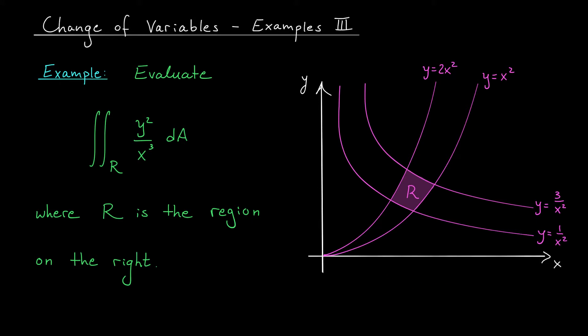You can see that it's bounded between four curves: y equals x squared, y equals 2x squared, y equals 1 over x squared, and y equals 3 over x squared. Now, from the picture, we can tell that this region is neither type 1 nor type 2, so perhaps we can use a change of variables to transform R into a more friendly region.